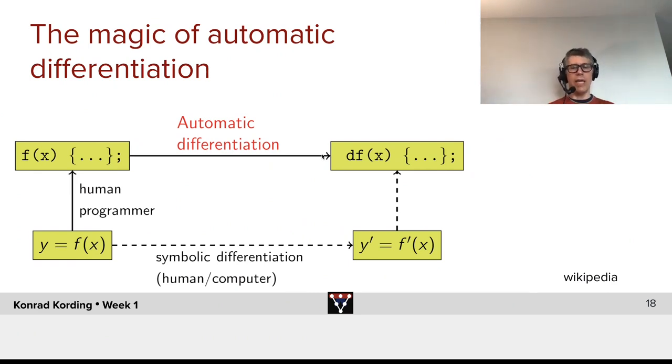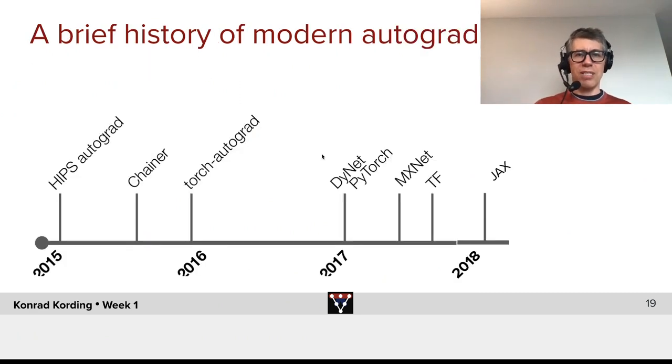The alternative could be you use pencil and paper and calculate the derivatives and implement that as a PyTorch function. Why don't we do it that way? It turns out it would be very much slower for implementation. And it makes life very, very difficult if you have to do that by hand. Thank God we are over those times.